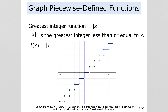The next concept is the greatest integer function. The greatest integer of x is the greatest integer less than or equal to x. For example: the greatest integer of 1 is 1. The greatest integer of 1.5 is 1. The greatest integer of 2.5 is 2. The greatest integer of negative 1.5 — since we're going less than — is negative 2.